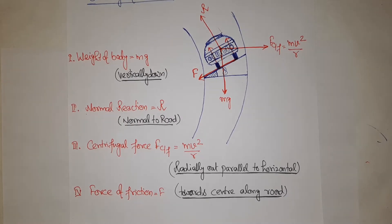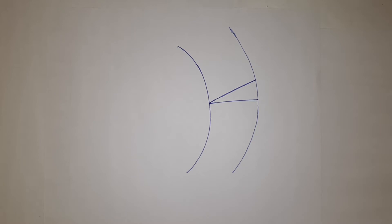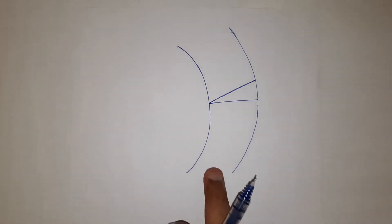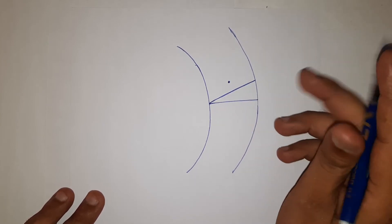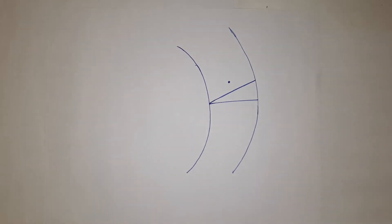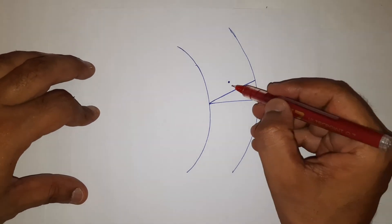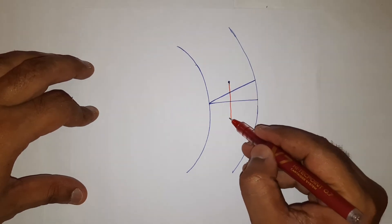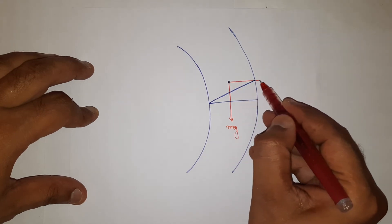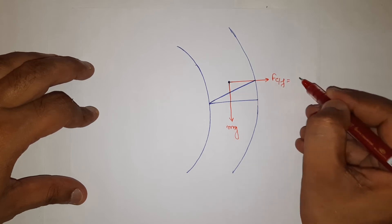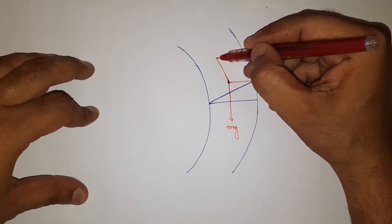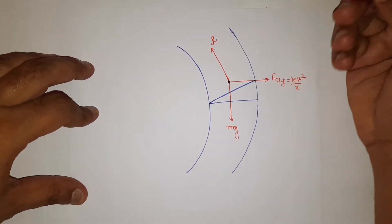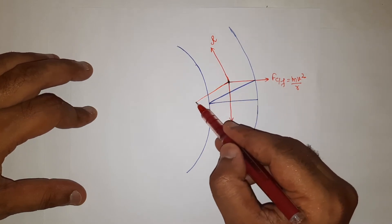Applying the free body diagram terminology and taking all forces to the center of mass: I am creating a cleaner diagram. Forces acting on the center of mass are mg vertically downward, centrifugal force mv²/r, normal reaction R normal to the road, and force of friction parallel to the road along the road towards center.